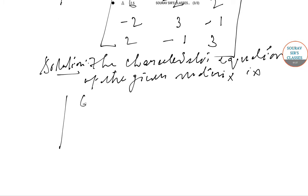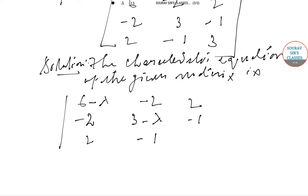The characteristic equation is: (6 - λ), -2, -2 in the first row; -2, (3 - λ), -1 in the second row; 2, diagonally you subtract lambda from every diagonal element, so (3 - λ) in the third row. Equate the determinant to 0.